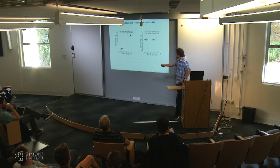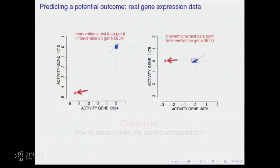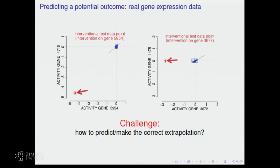Then you actually do the experiment in the lab: you manipulate the X gene, turn off its activity, and the prediction on the Y gene comes out down there — which fits quite well to the regression line. Here is another pair of genes: you observe a correlation and a regression strength, then knock out the X gene in the lab. There is a change in X expression, but nothing happens to Y — it's exactly as before. The challenge is the same: how can you make the prediction whether the outcome should be down there or here?